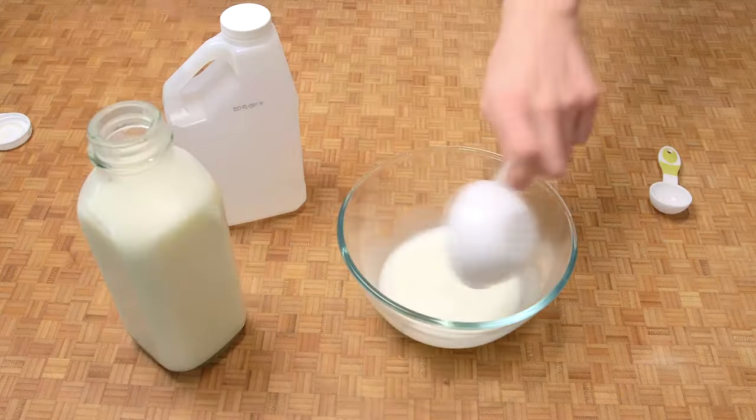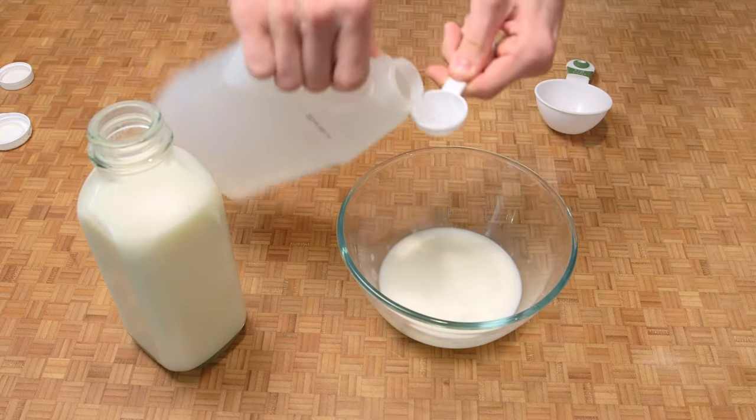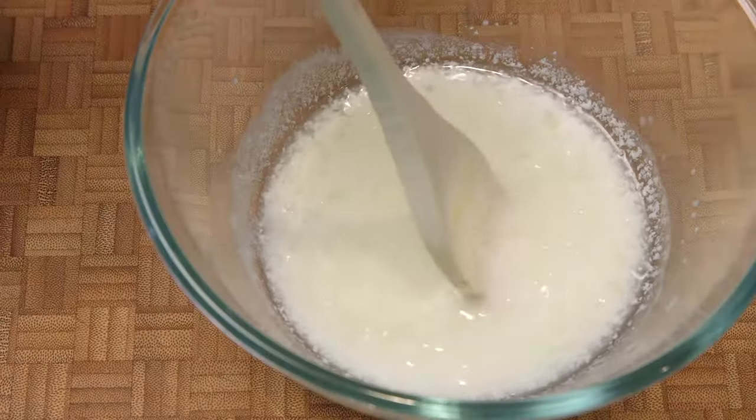You take one cup of skim milk, add two tablespoons of vinegar, stir that a bit, and then let it sit for a couple of minutes.